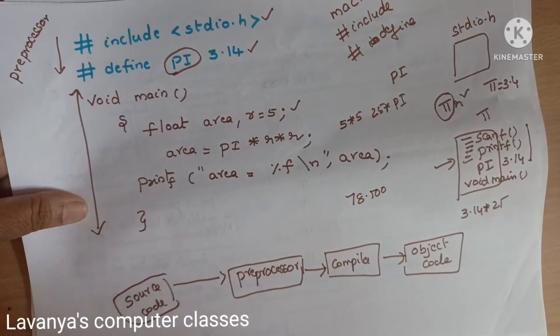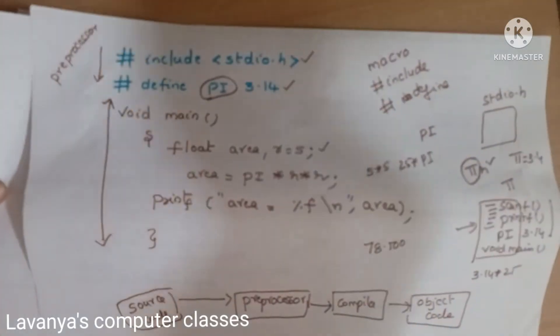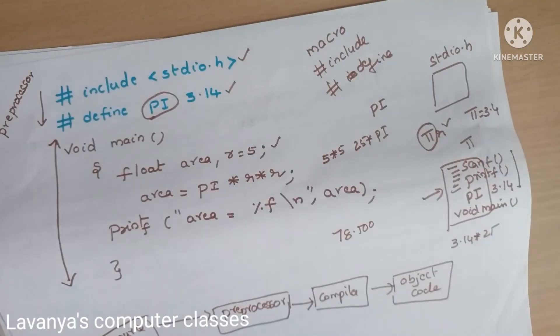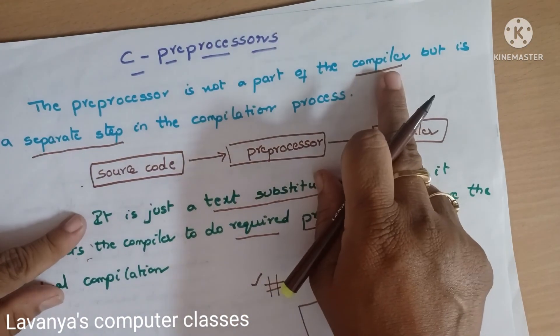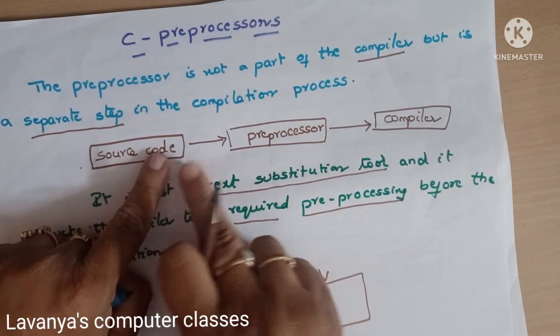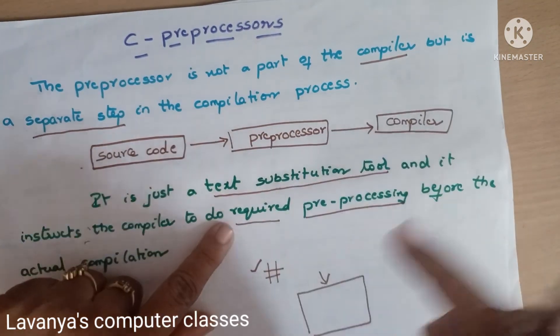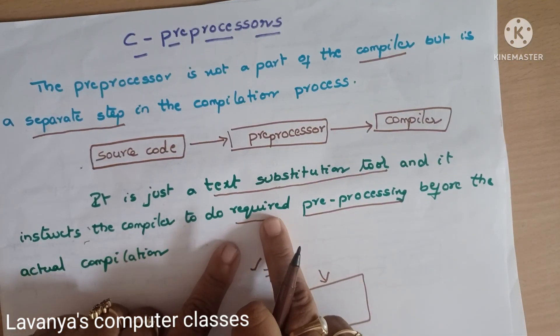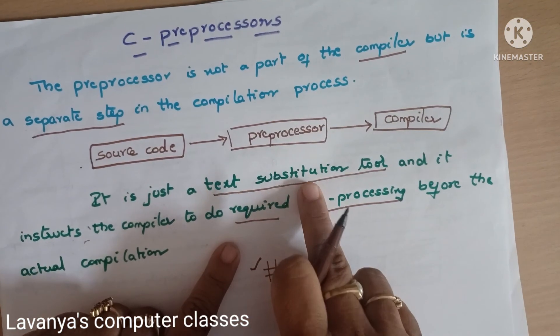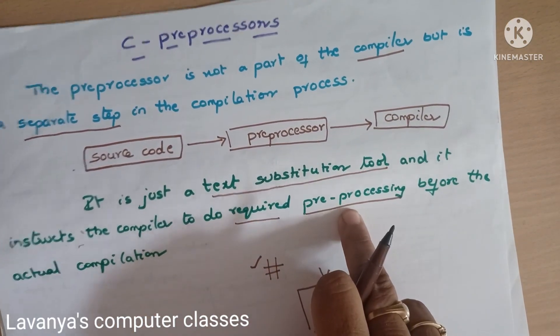So pre-processor directives work as follows: the Pre-Processor is not a compiler part; it is just a separate step in the compilation process. Source code is converted into object code using the compiler. But before the compiler runs, whatever requirements we need are substituted in place — that is called the pre-processor.